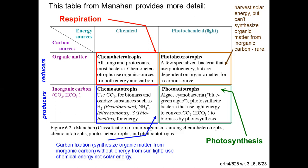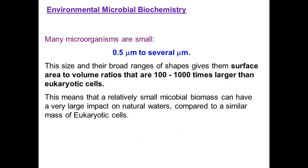We'll talk about chemo autotrophs a fair amount too. These exist in extreme environments — places where we have reduced chemicals such as deep in the earth, deep in groundwater flow, geothermal systems, and the like. But there are also chemo autotroph communities in very contaminated environments. Finally, photo heterotrophs is a category we're not going to speak much about during the semester.